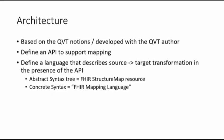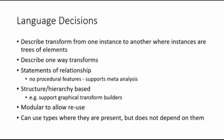The language describes transformation from one set of instances to another, where instances are trees of elements — directed acyclic graphs — where each node has a name and either children, which are nodes, or a value. That's the fundamental assertion we started with.